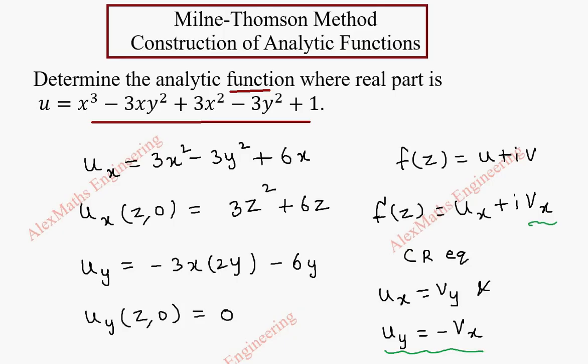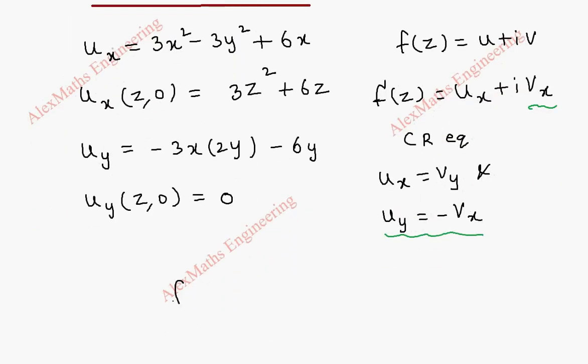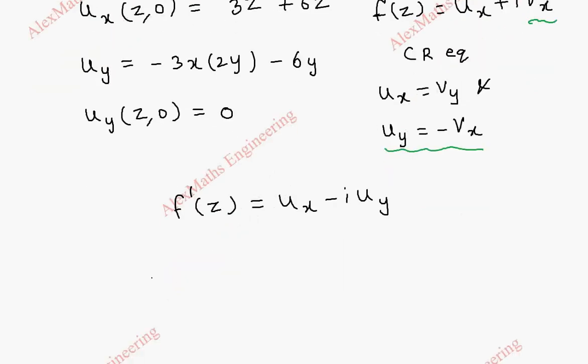So we are going to get f(z) as ux minus i times uy. Now by using the Milne-Thomson method, f(z) becomes integral of ux(z,0)dz minus i times integral of uy(z,0)dz.